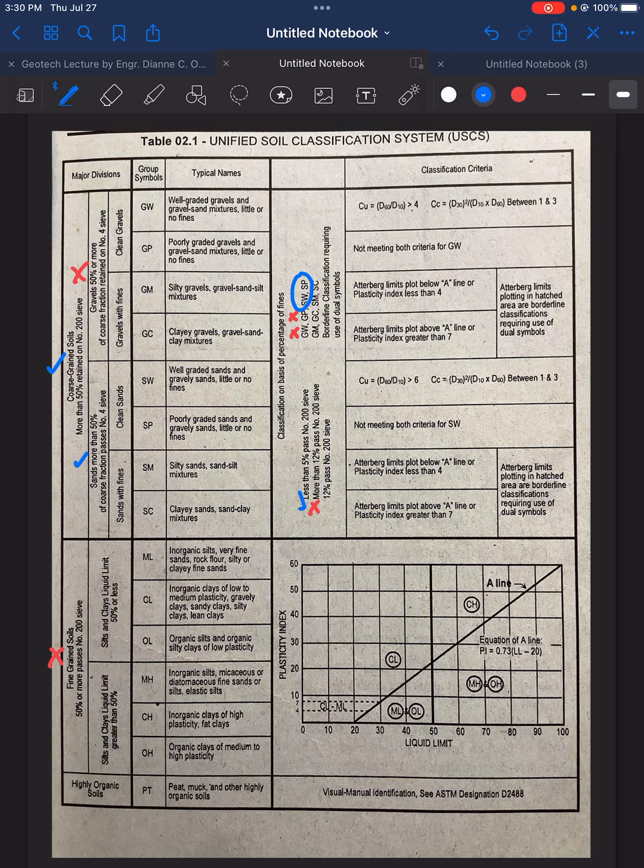How about the next criteria, 12% passing sieve number 200? Does not meet that criteria. So we will now choose between SW and SP.